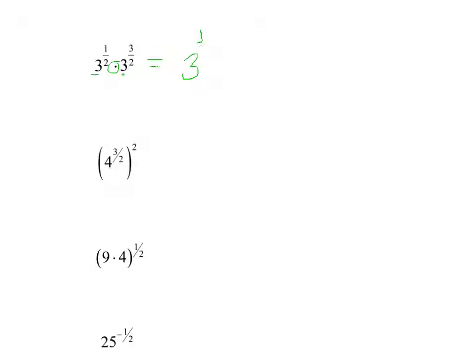So this is really 3 to the 1 half plus 3 halves. And thankfully it already has a common denominator, we add that, we get 4 halves. And 4 halves is the same thing as 2, so 3 squared is 9. It simplifies just like that.